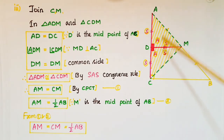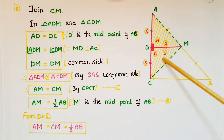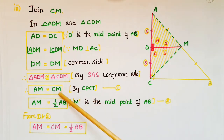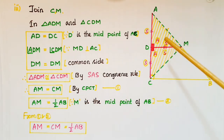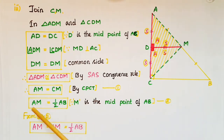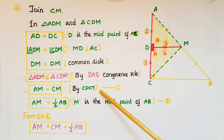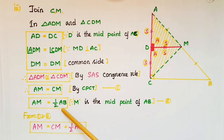Once these two triangles are congruent, we can equate the corresponding parts. So AM equals CM by CPCT. We also know that M is the midpoint of AB, so AM equals BM, which means AM equals half of AB. From these two results — AM equals CM, and AM equals half of AB — we conclude that CM equals AM equals half of AB.